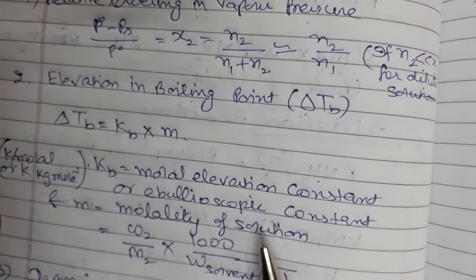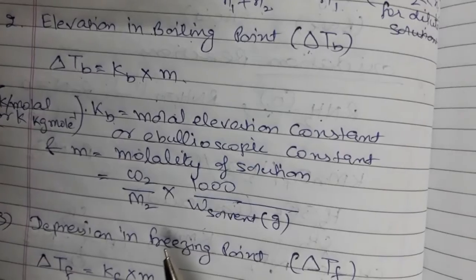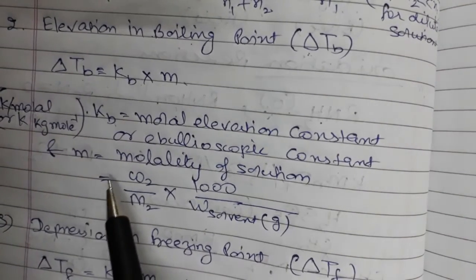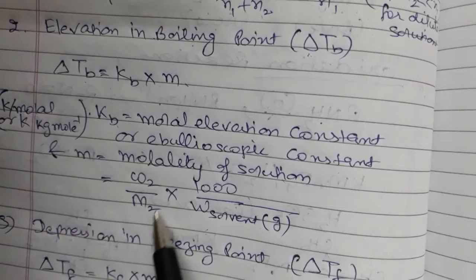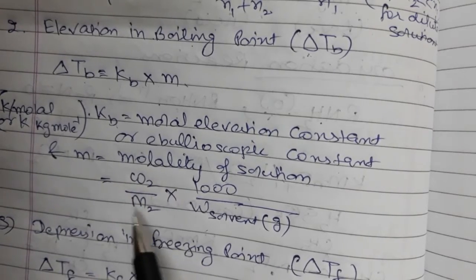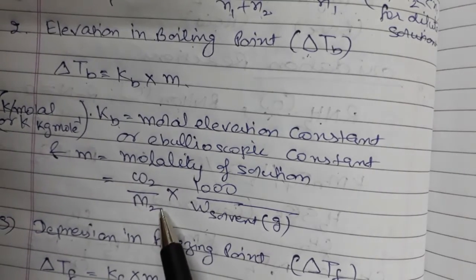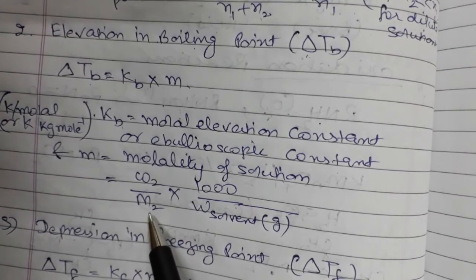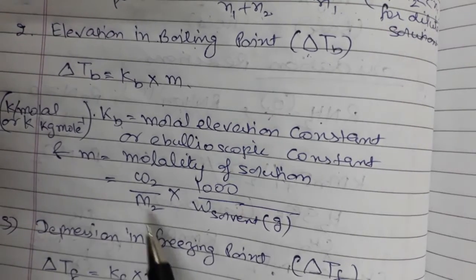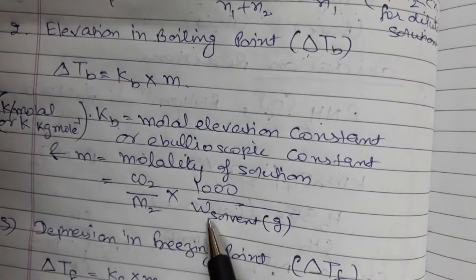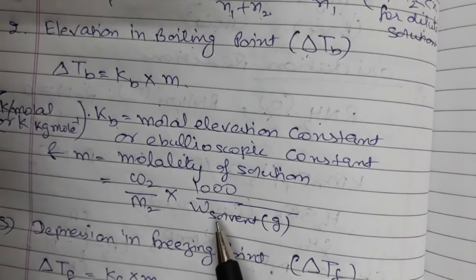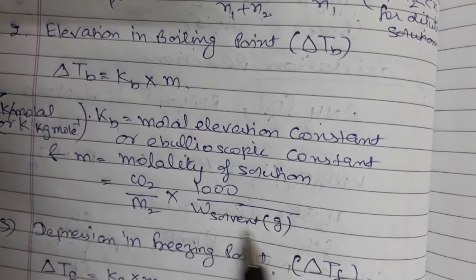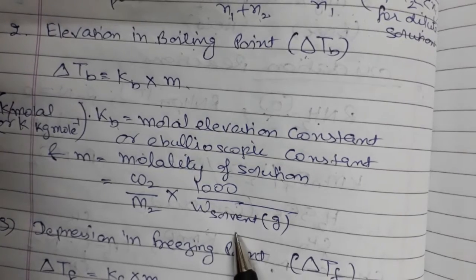Molality is a concentration term defined as the number of moles of solute dissolved per kilogram of solvent. So, number of moles of solute is W2 upon M2, and this is per kilogram of the solvent. If the weight of solvent is given in grams, we divide by 1000 to convert it to kilograms, which brings 1000 to the numerator.